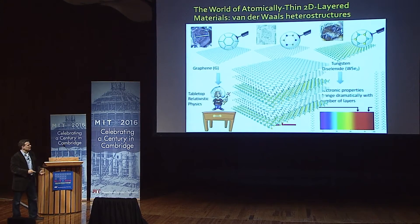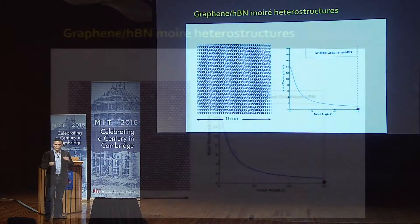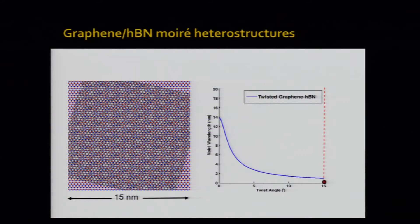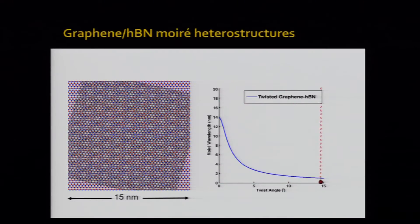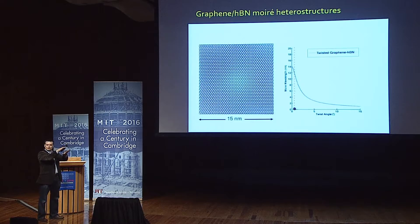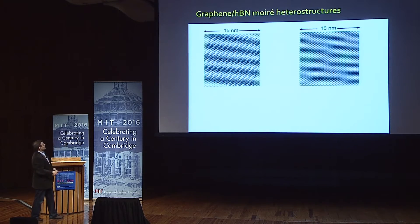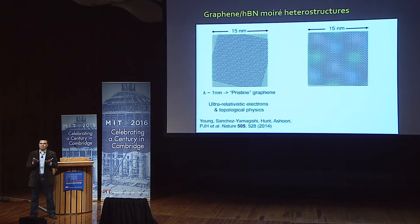Let me tell you an example of something we've been doing in my group. What happens if you put two of these materials — graphene and hexagonal boron nitride — on top of each other? These two materials have slightly different lattices and are rotated with respect to each other, so a moiré pattern forms. This moiré pattern is a periodic structure whose wavelength depends on the relative angle of rotation. If you have a very large angle of rotation, the moiré wavelength is about a nanometer, and hexagonal boron nitride is a superb substrate for graphene where it can exhibit its most pristine electronic properties, governed by ultrarelativistic physics.